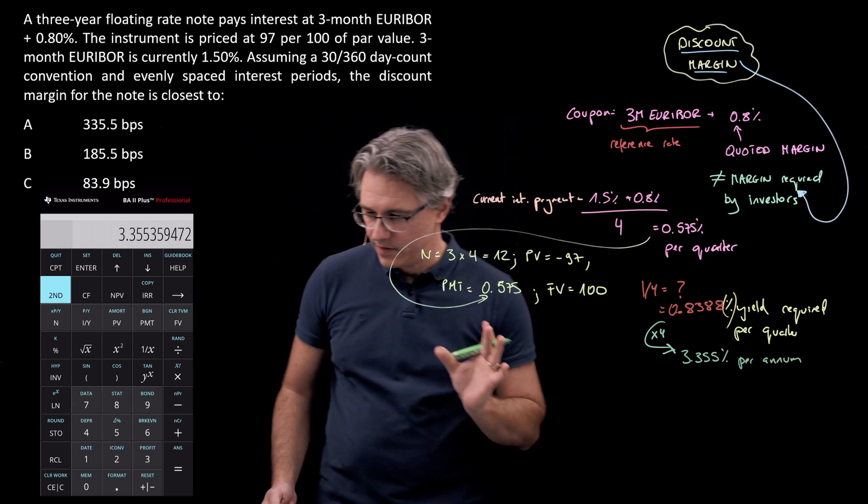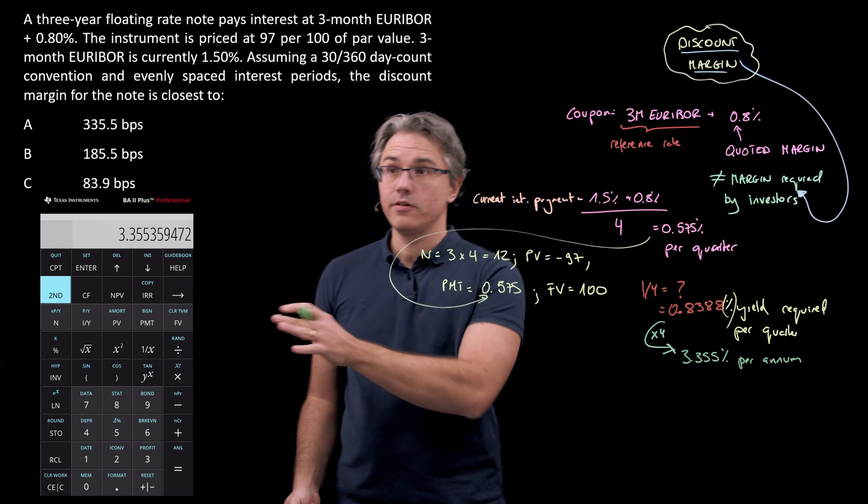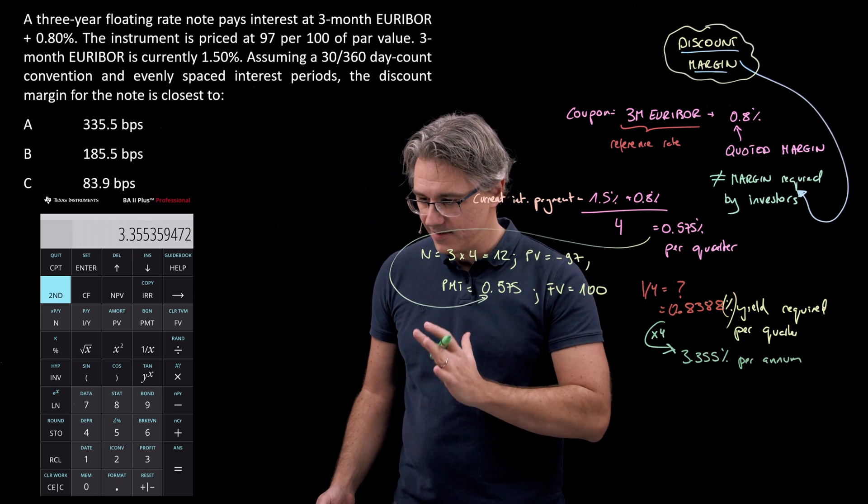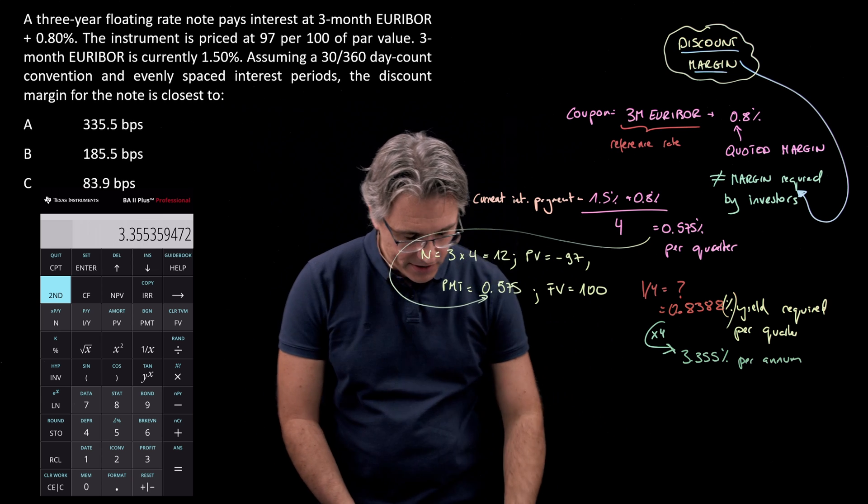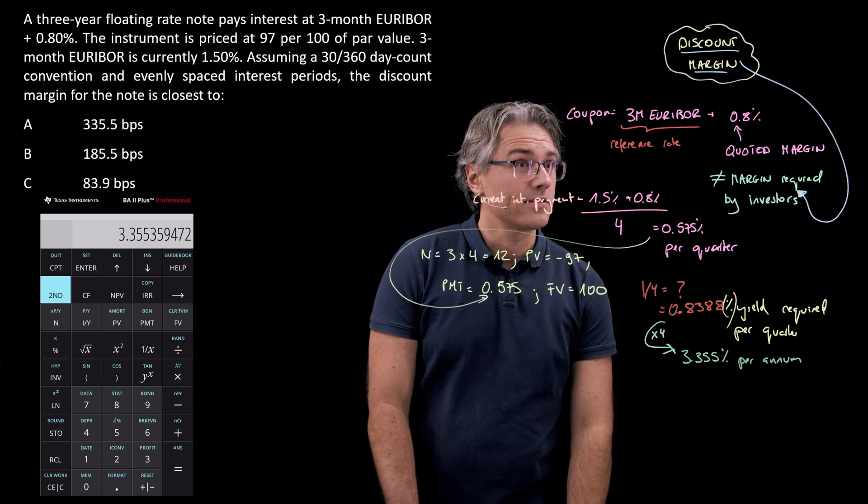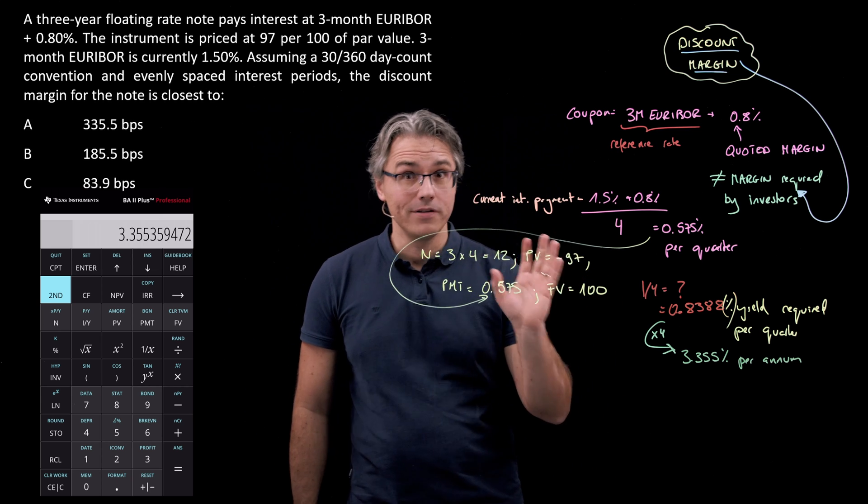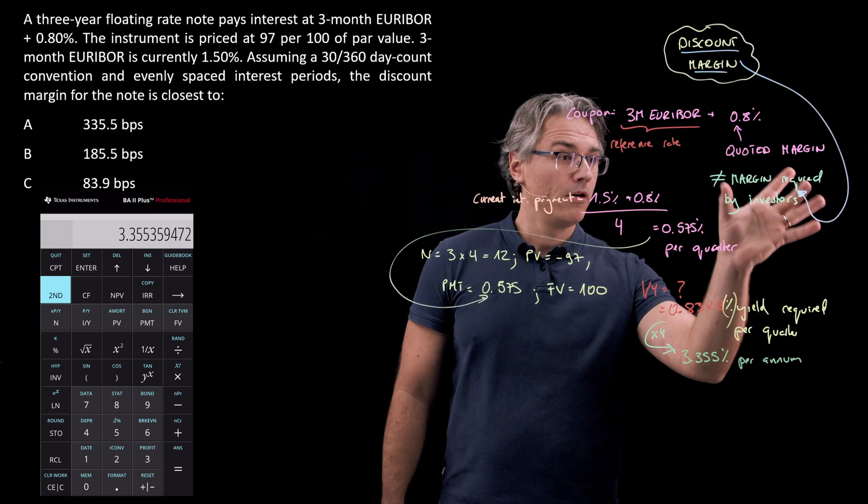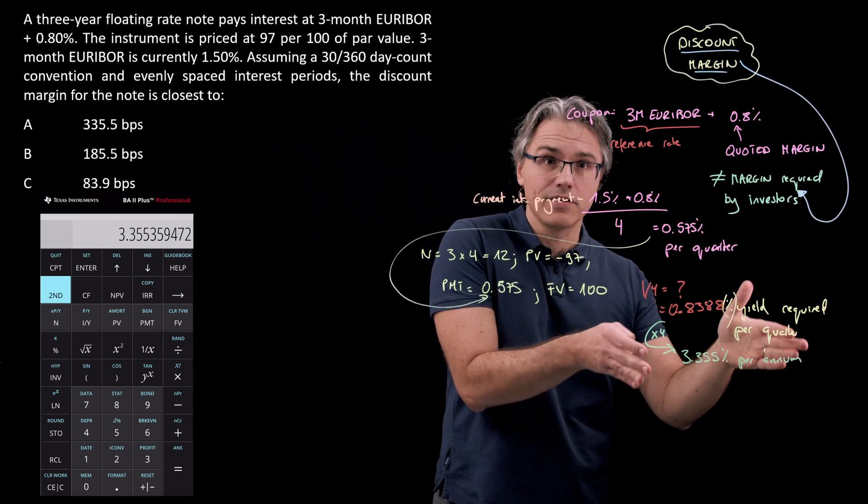Be careful—this is not the answer to the question, although we've got an answer which corresponds to answer A. We are asked for the margin, the discount margin or the margin required by investors. That's the entire yield.